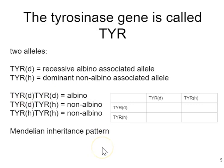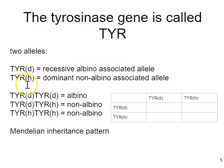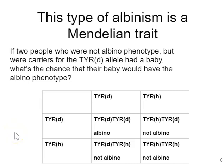There are two common alleles of the TYR gene important in this story. We'll call one the TYR-D allele and the other the TYR-H allele. TYR-D is recessive to TYR-H, and when you have two copies of TYR-D, you are albino. TYR-H is dominant, so you only need one copy to not have albinism. These are the three possible genotypes. Gene symbols today are generally written as the full gene name with a superscript or extension, as written here.